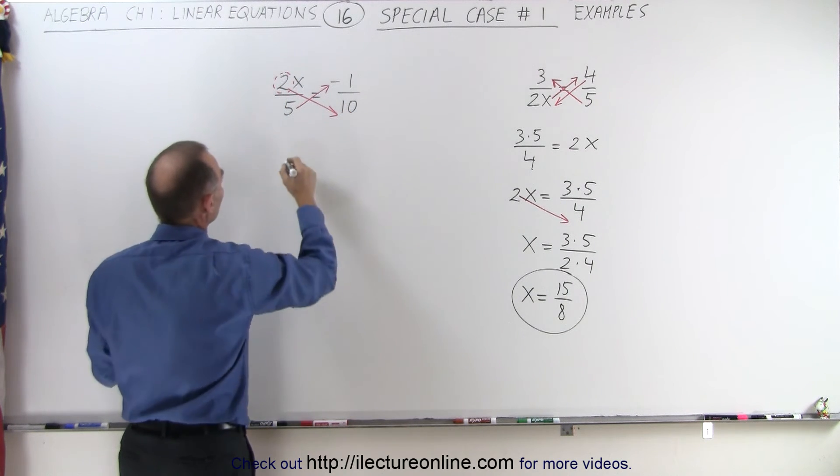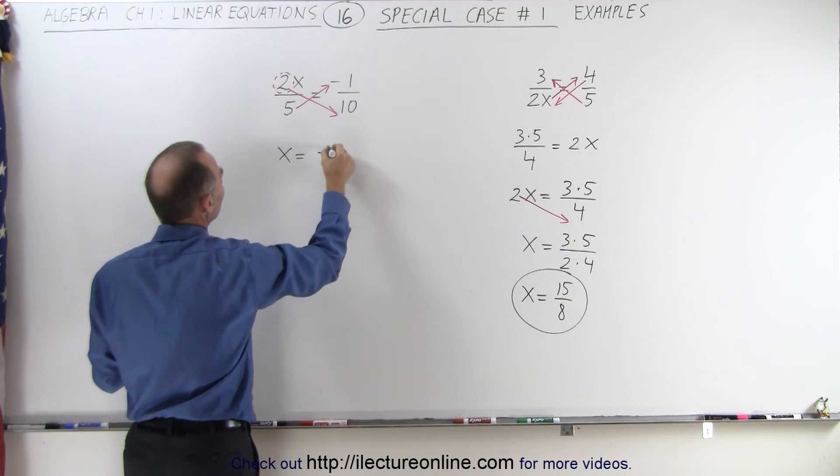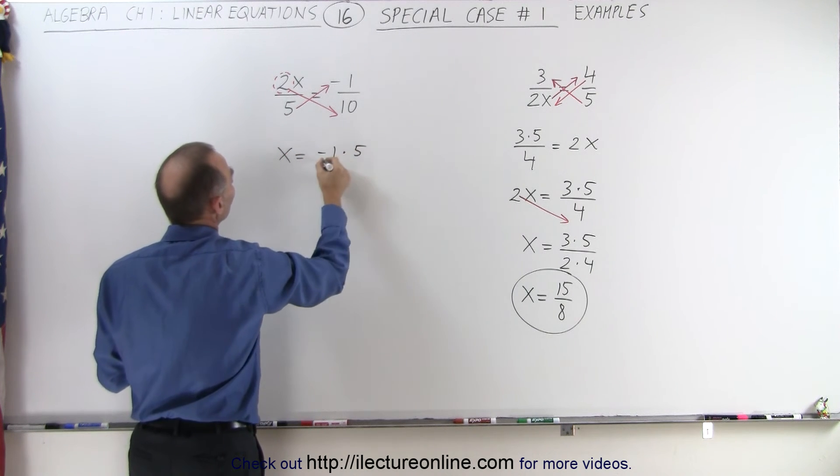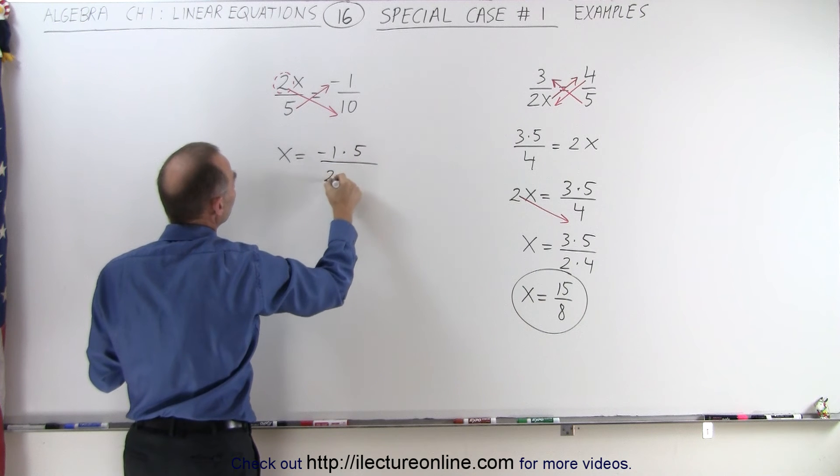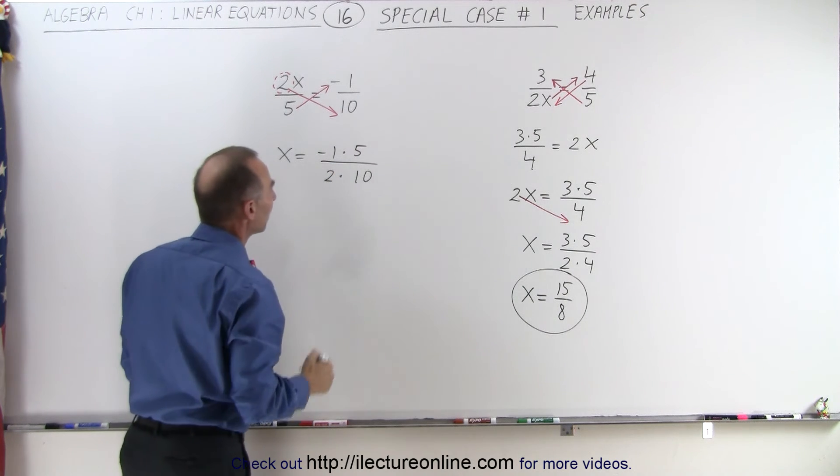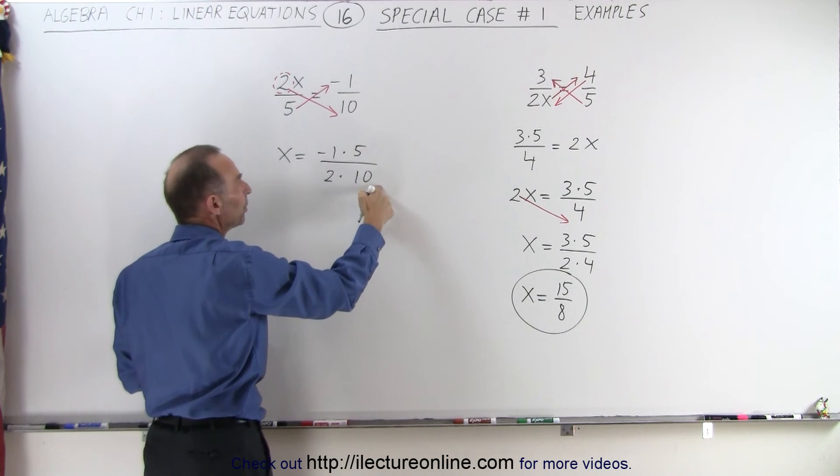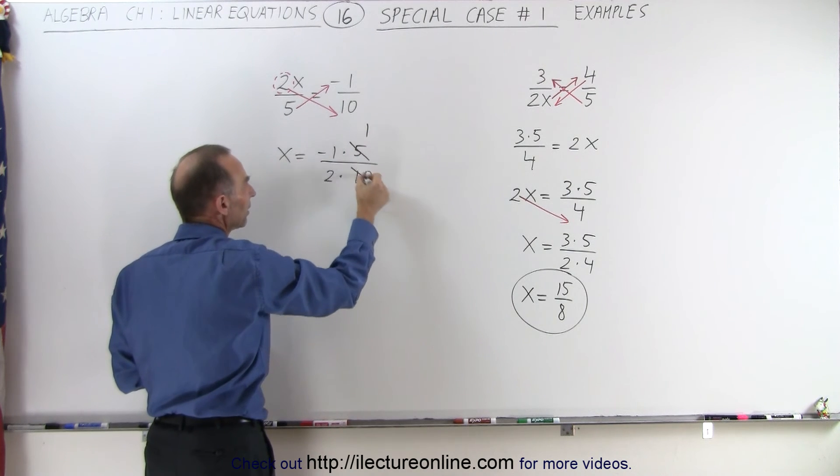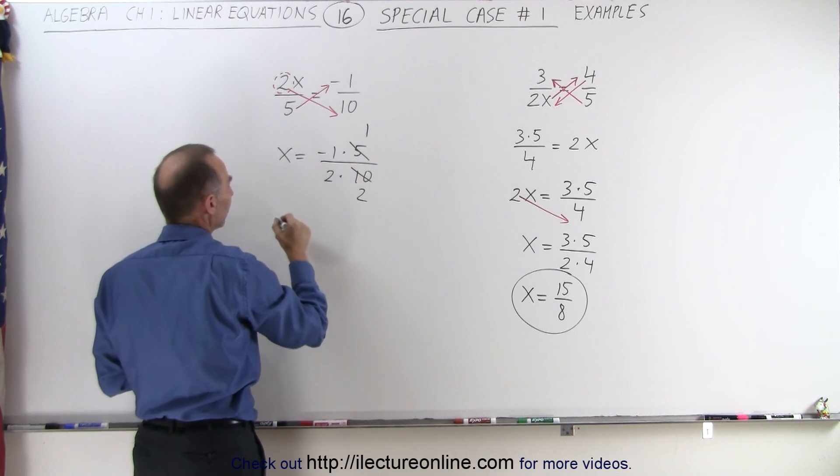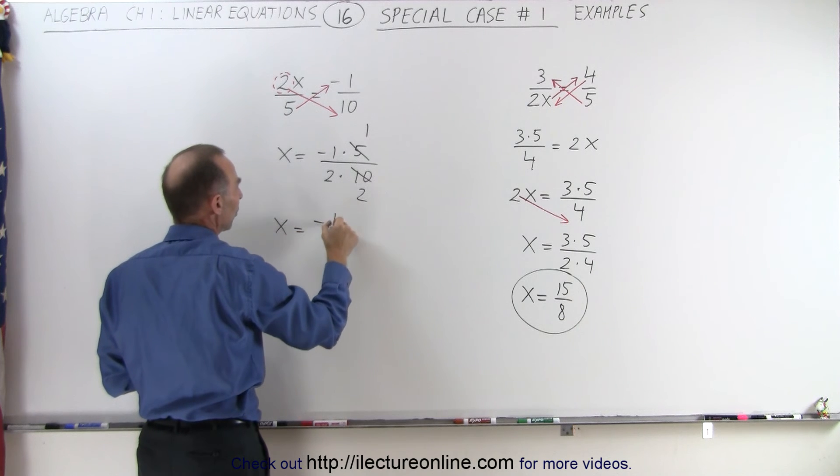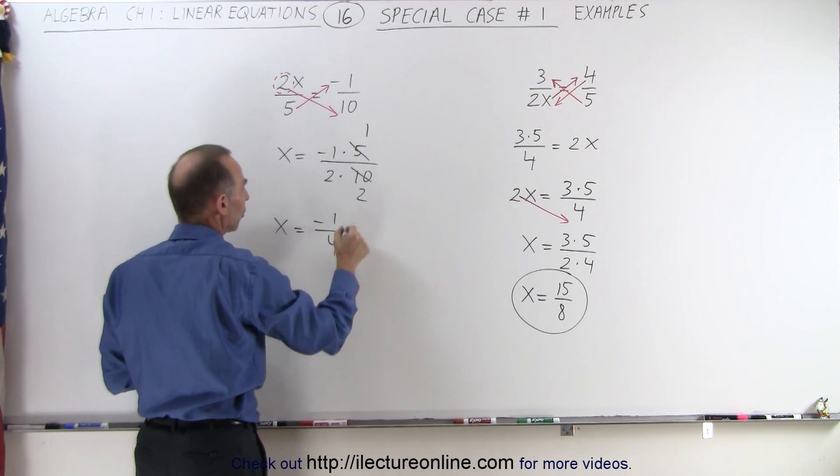Which then leaves me with the following: I end up with x equals minus 1 times 5 divided by 2 times 10. Now notice the 5 and the 10 can both be divided by 5, so 5 divided by 5 is 1, 10 divided by 5 is 2. And so x becomes equal to negative 1 divided by 2 times 2, which is 4.